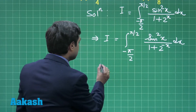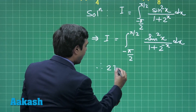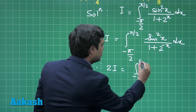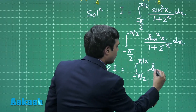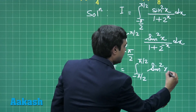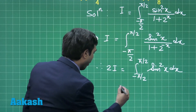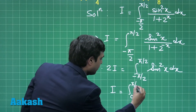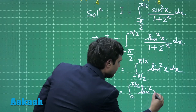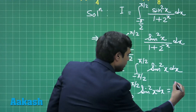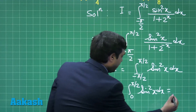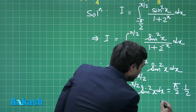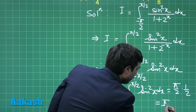Adding these two integrals, we obtain 2I equals the integral from minus π/2 to π/2 of sin²x dx, so I equals the integral from 0 to π/2 of sin²x dx, which equals π/2 multiplied by 1/2, that is π/4.